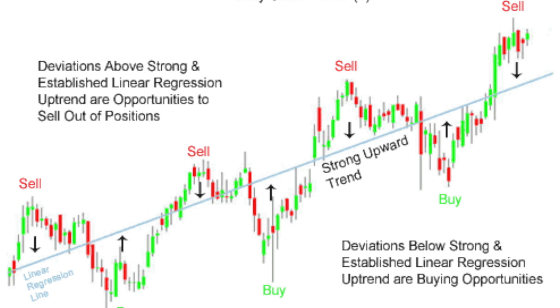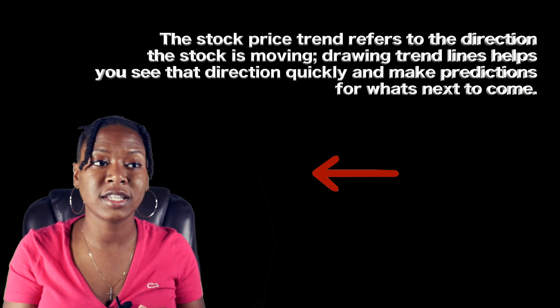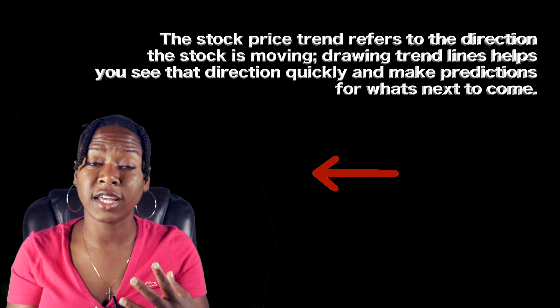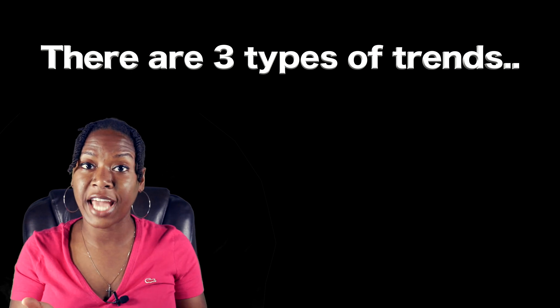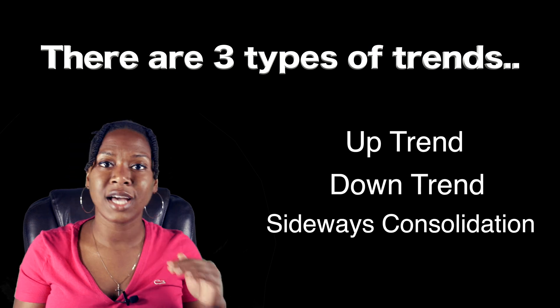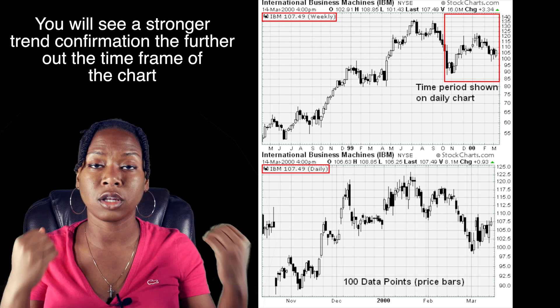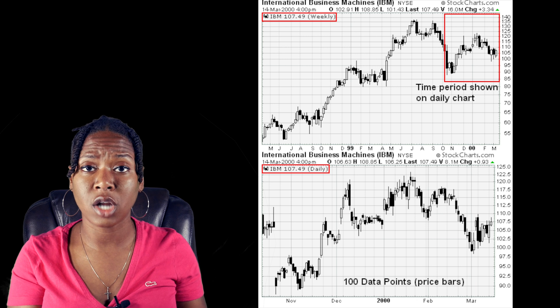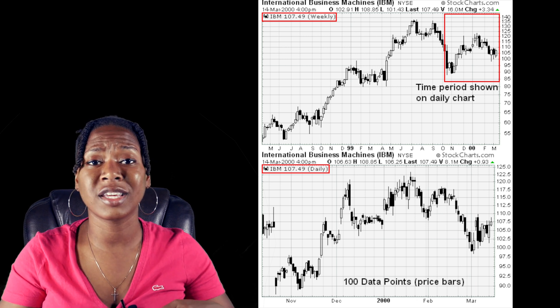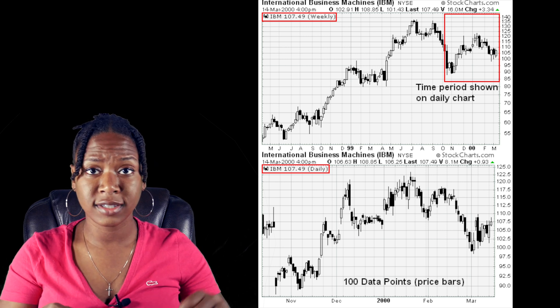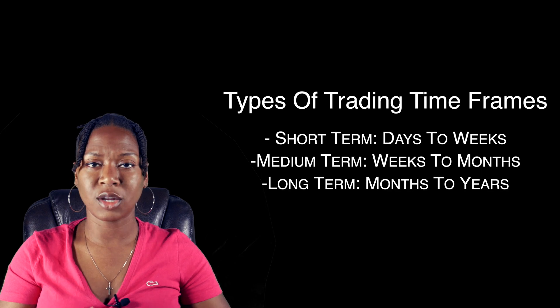The stock price trend basically refers to the direction the stock is going in. There are three different directions: an uptrend, a downtrend, or sideways consolidation — meaning it's just kind of going along without doing too much. Also, when looking at charts there are multiple time frames you can look at to gauge the trend. You'll get a stronger trend on a larger time frame, such as a five-year or one-year chart. Day or week charts will give you more noise from intraday activity.